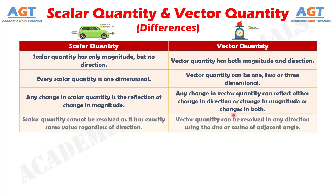Number four: scalar quantity cannot be resolved as it has exactly the same value regardless of direction, whereas vector quantity can be resolved in any direction using the sine or cosine of the adjacent angle.